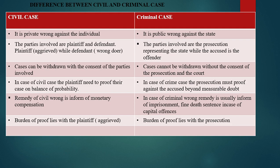In a civil case, the remedy for a civil wrong is in the form of monetary compensation. In a criminal case, the remedy is usually in the form of imprisonment, fine, or death sentence in the case of a capital offense. The burden of proof lies with the plaintiff or aggrieved party in a civil case, whereas in a criminal case, the burden of proof lies with the prosecution.